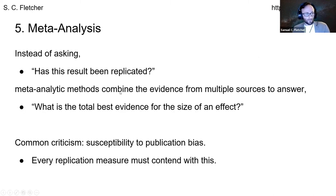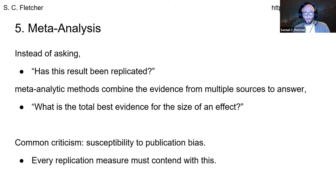The last option they used is probably the best: meta-analysis. Instead of asking has this result been replicated, meta-analytic methods combine the evidence from multiple sources to answer the question: what is the total best evidence for the size of an effect? One common criticism is that meta-analysis is susceptible to publication bias, but this is something every replication measure must contend with — it's not unique to meta-analysis. I do think meta-analysis has the best chance of being the best measure of replication. You can read more about that in the paper.